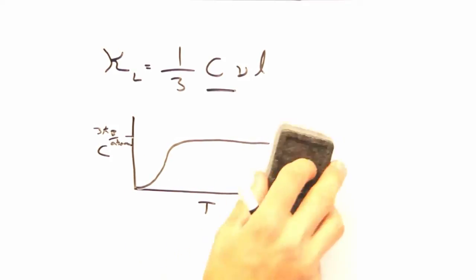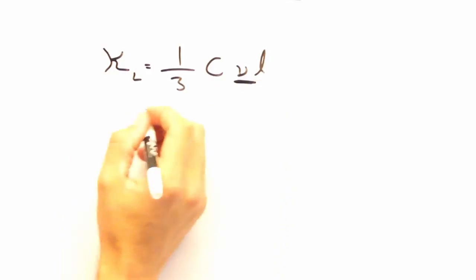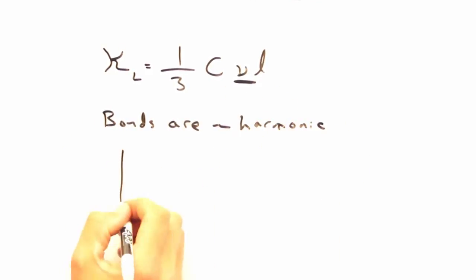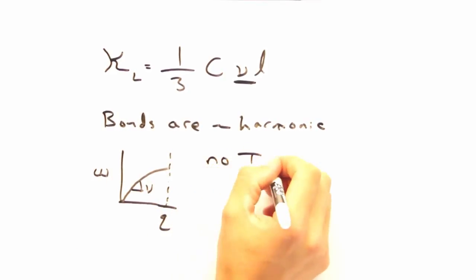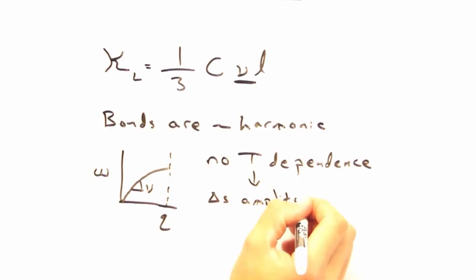Now let's look at the group velocity. To first order, there's no temperature dependence, and it's just a constant. That makes sense. I think of the bonds between atoms as harmonic oscillators with a fixed spring constant. So I would expect temperature to change the amplitude of vibration, but not the underlying spring constant.